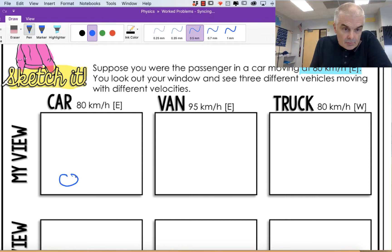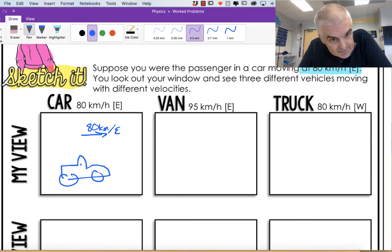So here's my car moving at 80 kilometers per hour to the east. Now let's think of this. From your perspective, from the perspective of the car, what's your relative velocity? It's zero kilometers per hour. You don't see or feel like you're moving, do you?